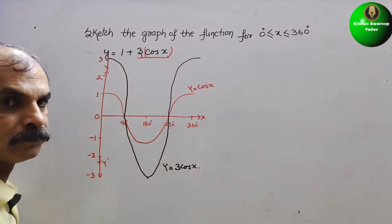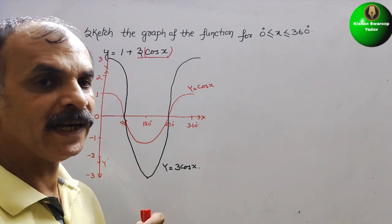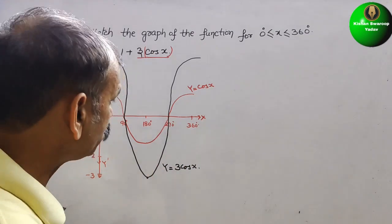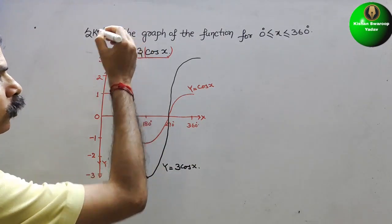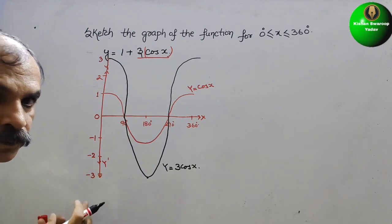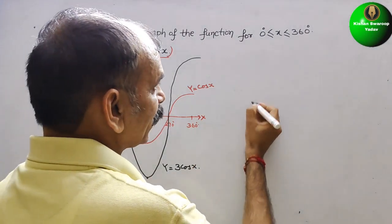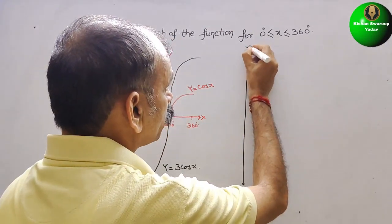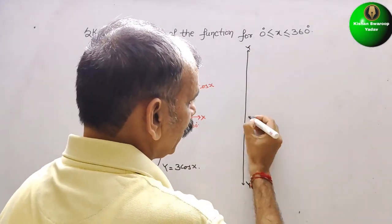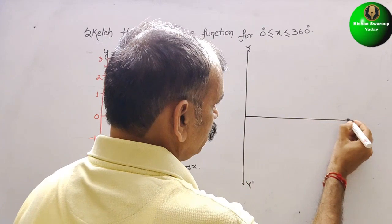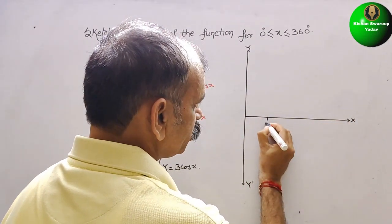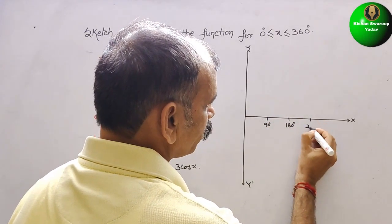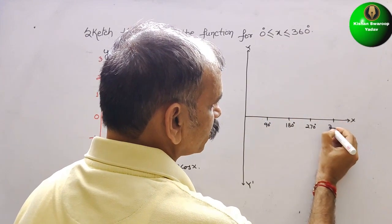Now we add 1. The 1 means we add 1 to y, so instead of starting at 3 it will go to 4. We draw the new axes: y-axis, y-dash, and x-axis, labeled 90°, 180°, 270°, and 360°.